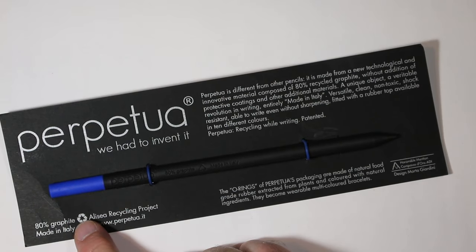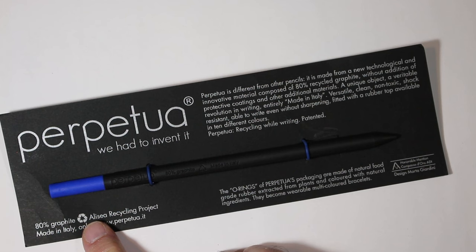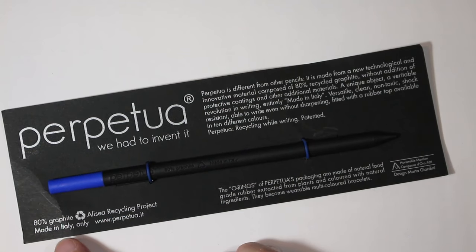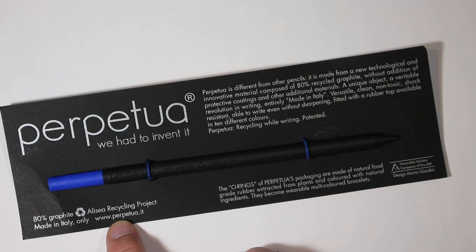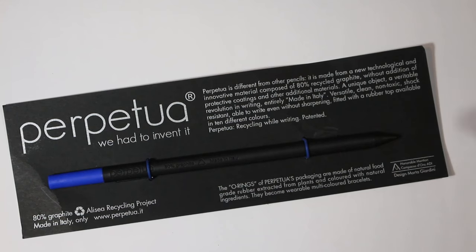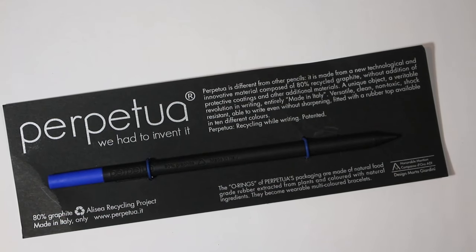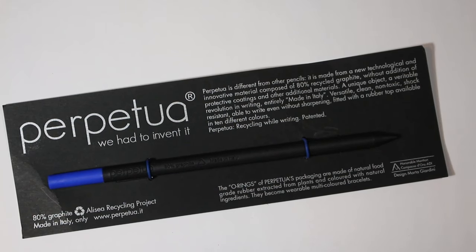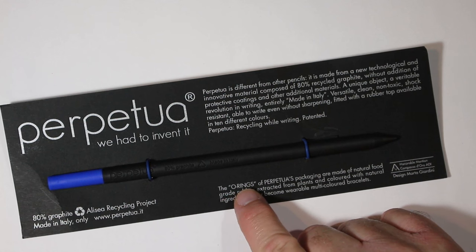80 percent graphite recycled, the Alisi Recycling Project, made in Italy only. There's the website. Check it out if you really want to know more about this. This graphite that they recycle is actually a byproduct of a manufacturing process, and they claim that this graphite would otherwise just go into a landfill if they weren't using it for some other purpose such as this Perpetua pencil.